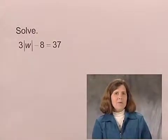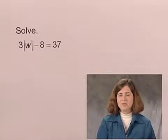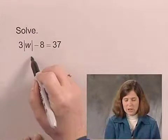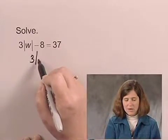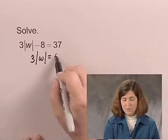To start out with, let's just solve for the absolute value of W, just like we were solving for X or N. To do so, we add 8 to both sides of the equation, and we have 3 times the absolute value of W equals 37 plus 8, or 45.